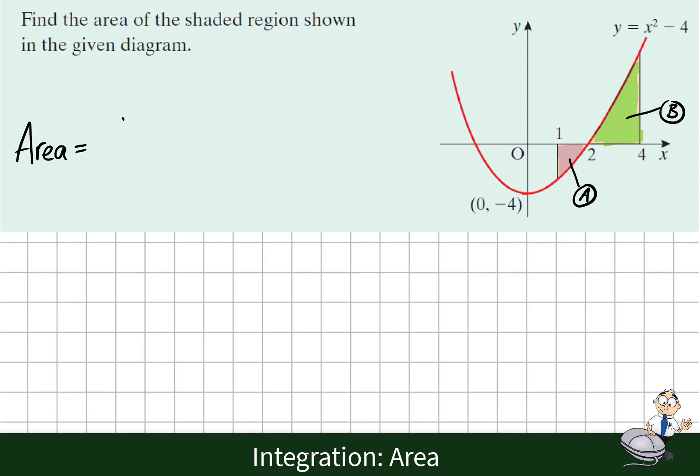The general rule to find the area between a curve and the x-axis is given by the area equals the integral between the limits b and a of the function with respect to x, because we're finding the area with the x-axis.